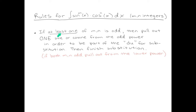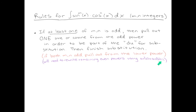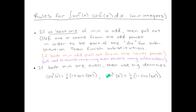To recap: if at least one of m or n is odd, pull out one of the odd powers to be part of the du for substitution, then finish the substitution. The even power left over needs to be rewritten using the trig identity sine squared plus cosine squared equals 1. If no odd powers appear — both m and n even — then we use a different set of trig identities. Using those identities converts even powers into expressions with odd powers of cosine, making them integrable.